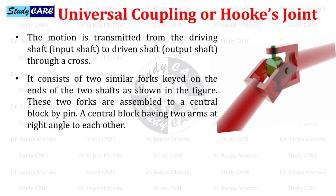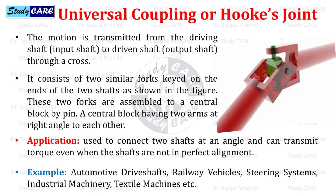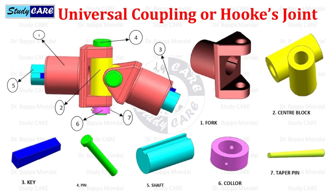The last one is universal coupling or Hooke's joint. Motion is transmitted from the driving shaft to the driven shaft through a cross. It consists of two similar forks keyed on the ends of the two shafts, assembled to a central block by pins. The central block has two arms at right angles to each other. Universal coupling is used to connect two shafts at an angle and can transmit torque even when the shafts are not in perfect alignment — for example, automotive drive shafts, railway vehicles, steering systems, industrial machinery, and textile machines.